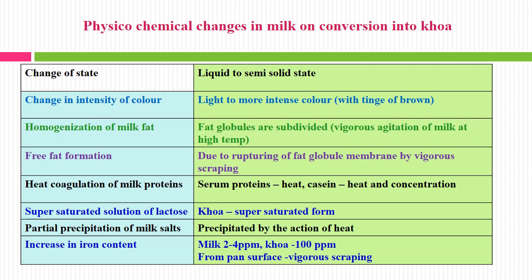Now we will discuss the physicochemical changes in milk on conversion into Khoa due to heat and dehydration. First, change of state: from liquid it becomes semi-solid. Then change in intensity of color from light to more intense — generally a creamy to dark creamy color with a tinge of brown. Then homogenization of milk fat: the fat globules are subdivided due to vigorous agitation of milk at high temperature. There is also formation of free fat due to rupturing of fat globule membrane by vigorous scrapping along with heat.